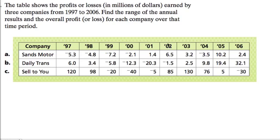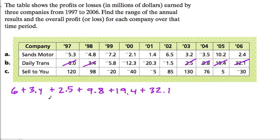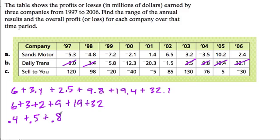Now we're looking at our second company here, Daily Trans, and we want to add up all the positives and the negatives and sum all of that to see if we have a profit. This time I'm going to first add the positives. So we have 6 and 3.4, 2.5, 9.8, 19.4, and 32.1.